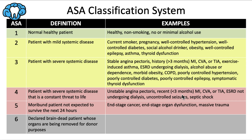ASA 5 is even more serious — this would be a moribund patient not expected to survive the next 24 hours without a surgery or operation. This includes end-stage cancer, end-stage infectious disease, end-stage cardiovascular disease, end-stage hepatic dysfunction, or a massive life-threatening trauma. Only palliative care beyond the necessary surgery is advised.